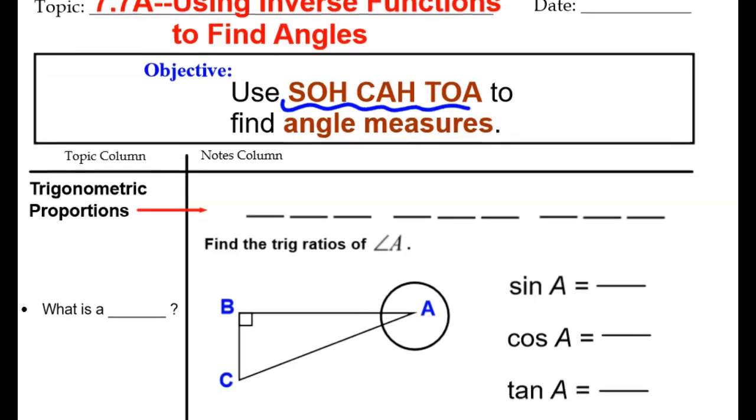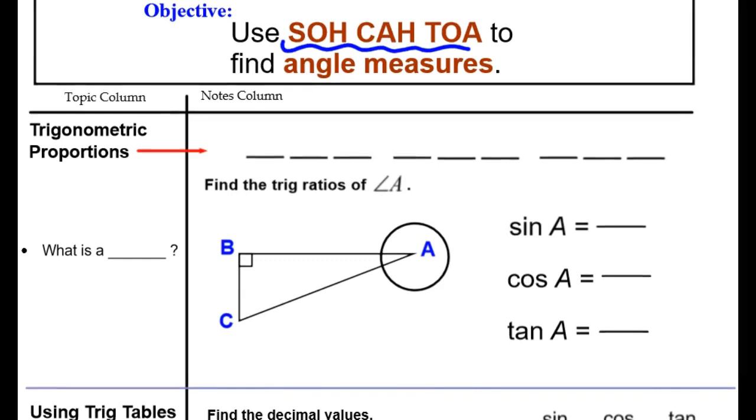The first thing I want to make sure we remember is our trig ratios. These blanks here are for our word SOH CAH TOA, so remember we have S-O-H for the sine, C-A-H for the cosine, and TOA for the tangent.